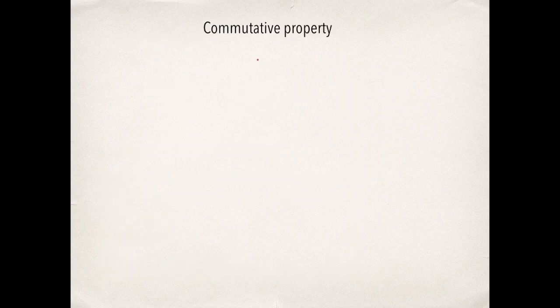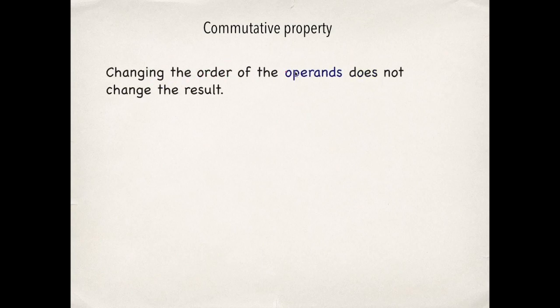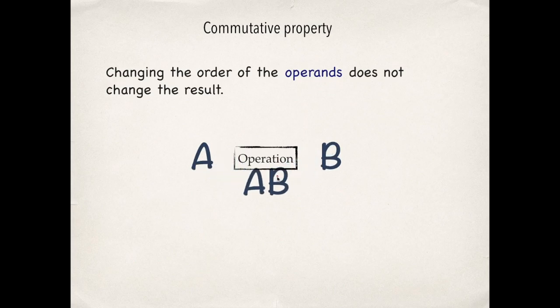The commutative property is satisfied when changing the order of the operands does not change the result. So if we have A operation B where A and B are operands, if we change the order of the operands then the result must not change.